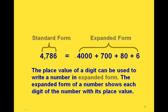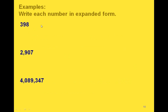One other thing we can do with whole numbers is go from standard form to an expanded form. The expanded form shows each digit that was in the original number and tells us its place value. So if we write this one as 4,000, that tells us that 4 was in the thousands place, that 7 was in the hundreds place, that 8 was in the tens place, and 6 was in the ones place.